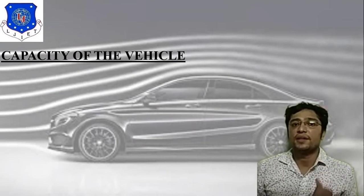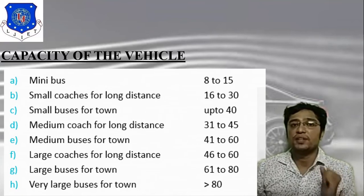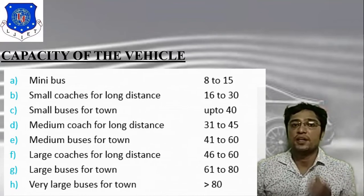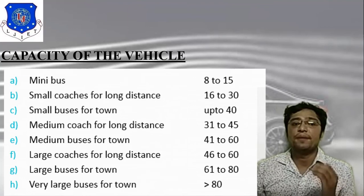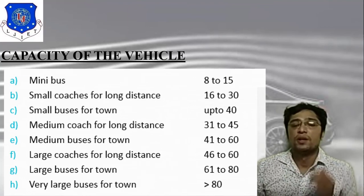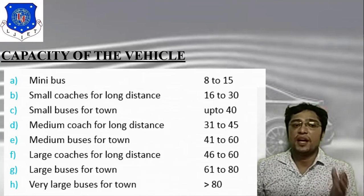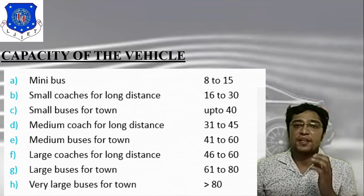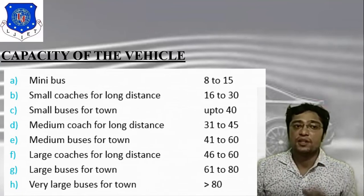Based on vehicle capacity, there are eight categories. First is the minibus with a passenger capacity of 8 to 15. Second is small coaches for long distance with capacity 16 to 30. Third is small buses for town with capacity up to 40. Fourth is medium coach for long distance with capacity 31 to 45. Fifth is medium buses for town with capacity 41 to 60. Sixth is large coaches for long distance with capacity 46 to 60. Seventh is large buses for town with capacity 61 to 80. Eighth is very large bus for town with capacity greater than 80.